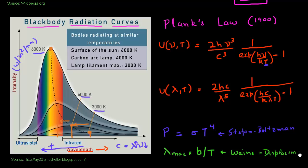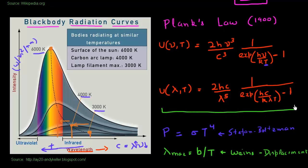Wien's Displacement Law can be derived by taking the derivative of Planck's equation as a function of wavelength and equating it to zero, which gives the maximum wavelength as a function of temperature. These are the key features of black body radiation.